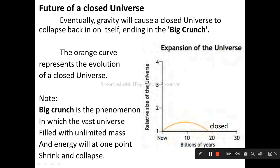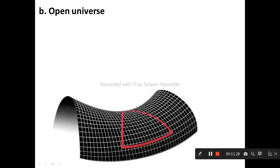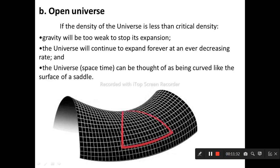If the density of the universe is less than critical density, gravity will be too weak to stop its expansion. The universe will continue to expand forever at an ever-decreasing rate, and the universe can be thought of as being curved like the surface of a saddle.